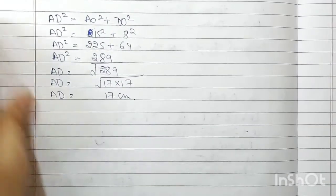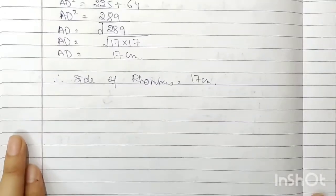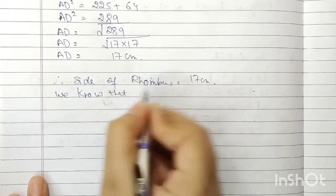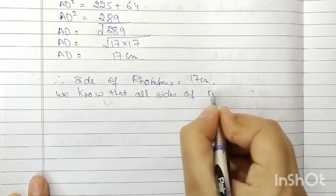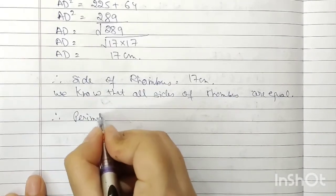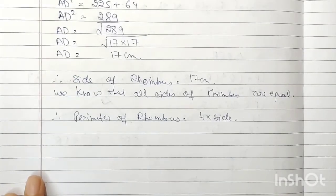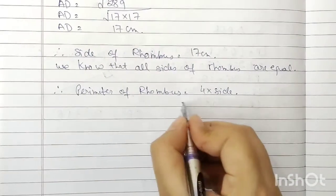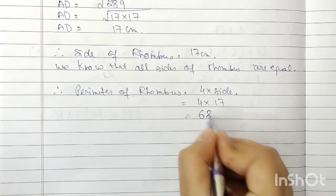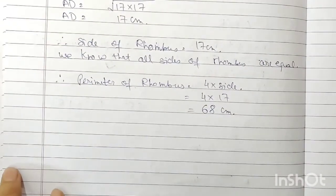Therefore the side of the rhombus = 17 cm. Since all sides of a rhombus are equal, the perimeter of the rhombus = 4 × side = 4 × 17 = 68 cm. So the perimeter of the rhombus is 68 cm. That's all for today, thank you.